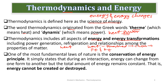One of the most fundamental laws of nature is the conservation of energy principle. It simply states that during an interaction, energy can change from one form to another. Energy cannot be created nor destroyed, but can change from one form to the other. We mostly change forms of energy — the energy we eat — to get energy to do work, and in engineering we use steam to do most of our work.